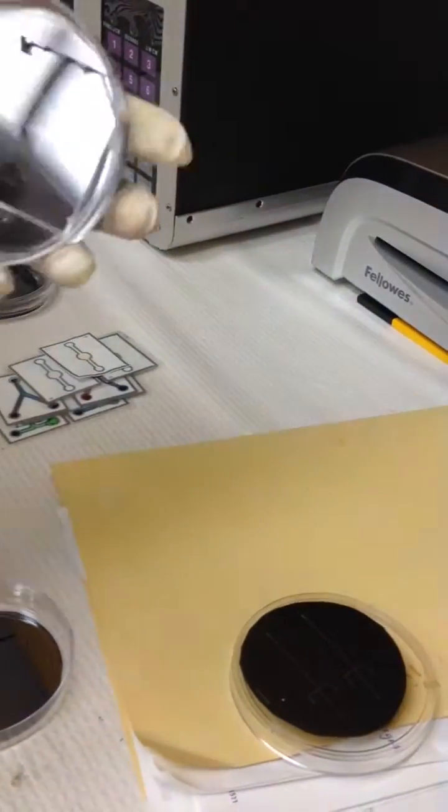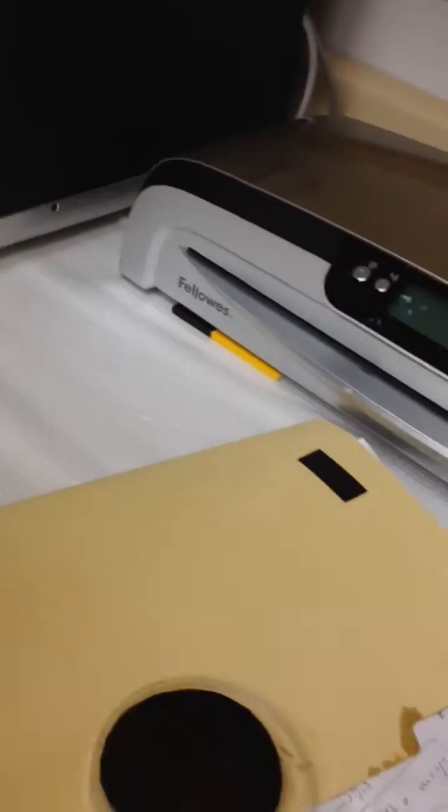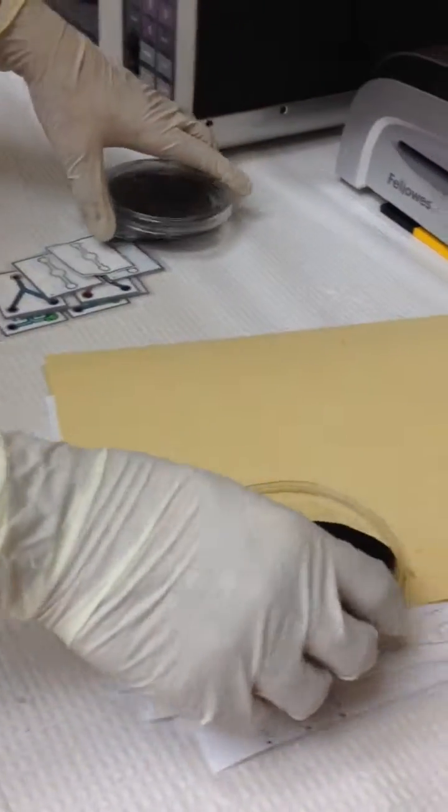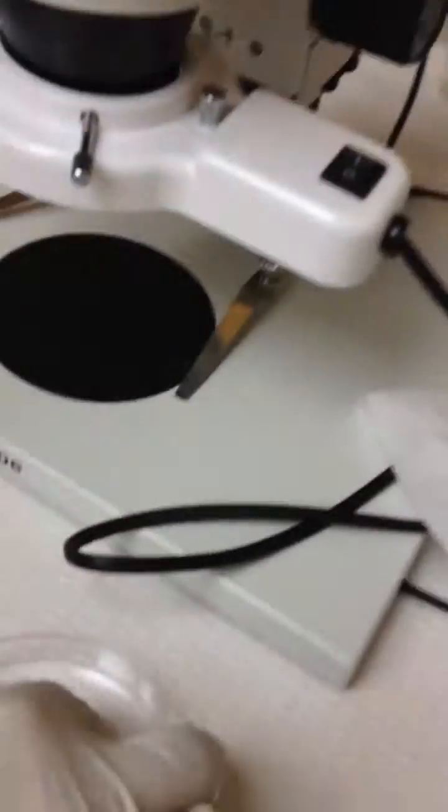This is another chip with another patterning on it. You pour in this material called PDMS and we cut out these little shapes, which is a little rubbery thing that we got right here.